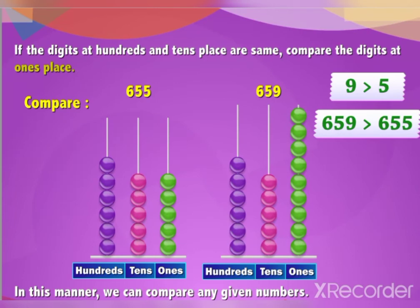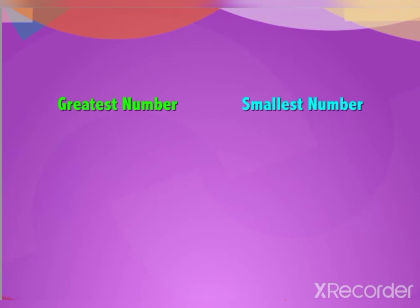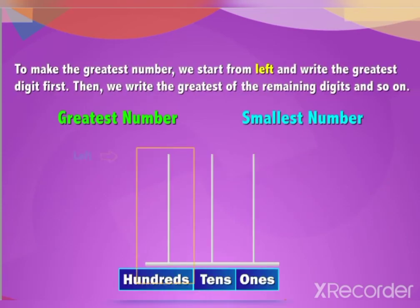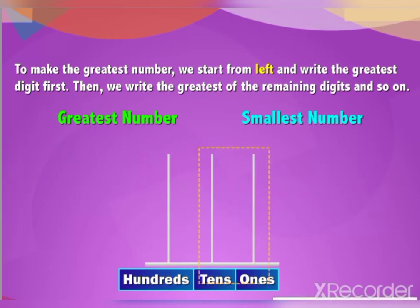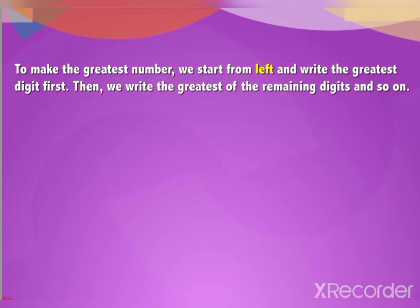In this manner, we can compare any given numbers. Now let us learn to make the greatest and smallest number with a given set of three digits. To make the greatest number, we start from the left and write the greatest digit first, then the greatest of the remaining digits, and so on. For example, the greatest number made using the digits 6, 3, and 8 will be 863.